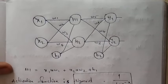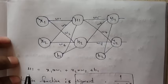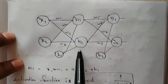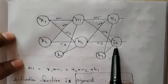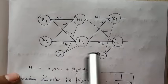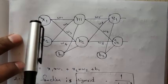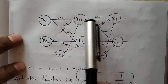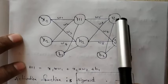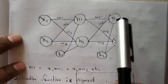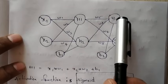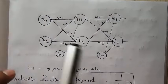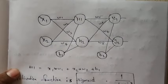Let's see backpropagation in a neural network with an example. This is a neural network. This is the input layer, this is the hidden layer, and this is the output layer. These two are the biases. Input from the input layer goes to the hidden layer, then from the hidden layer, the output goes to the output layer, and we get the actual output. We will backpropagate the error calculated here back to the input layer, so that we update these weights. We will see how this overall process works with an example.